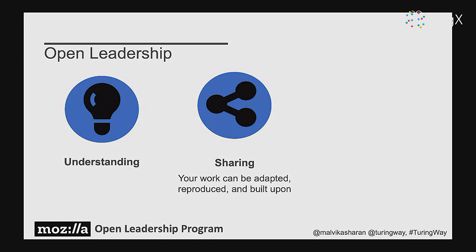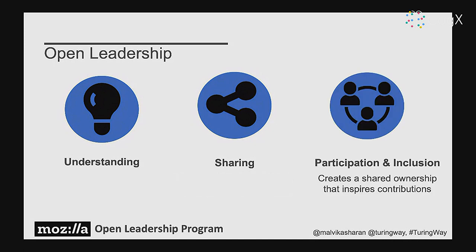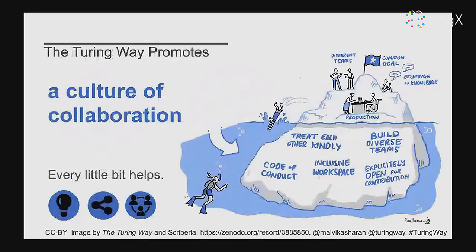We are part of Tools, Practices and Systems, and the Turing Way sits across all these themes. We use open leadership principles, which put emphasis on understanding — so your work is designed to be clear, authentic, and widely accessible; sharing — so your work can be reused, remixed, adapted, reproduced, and built upon; and participation and inclusion — so your work is designed for inclusion to create shared ownership and inspire contributions.